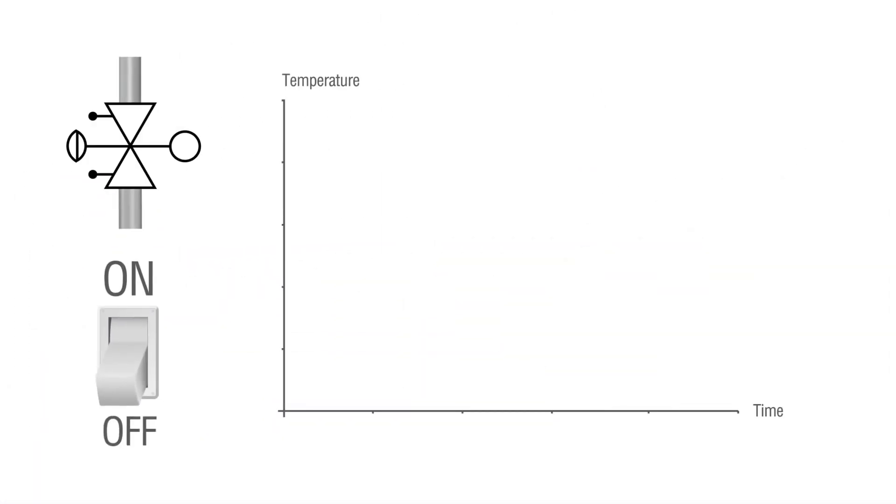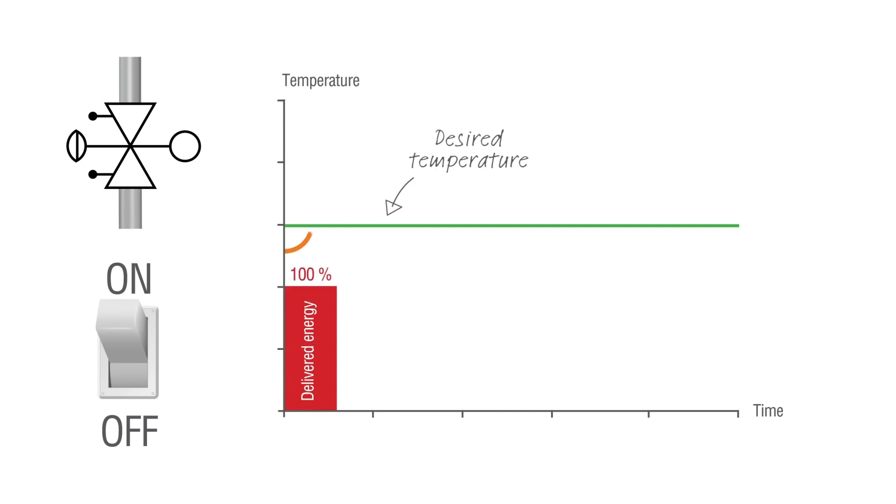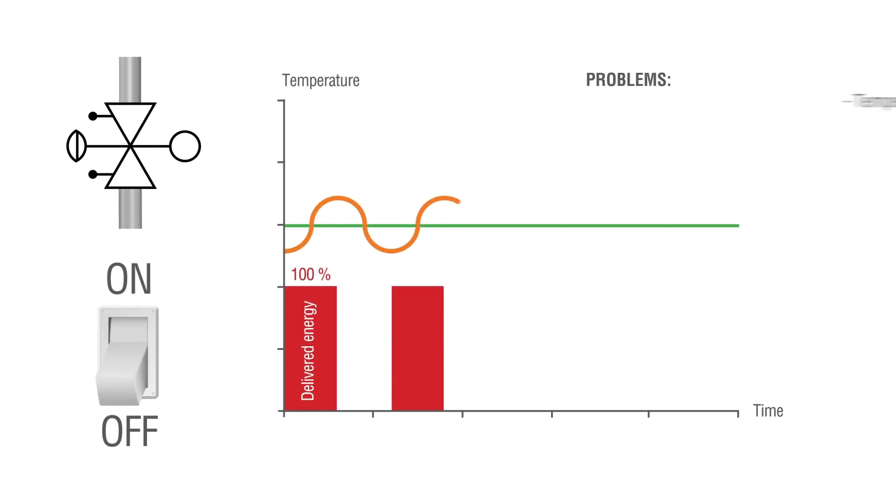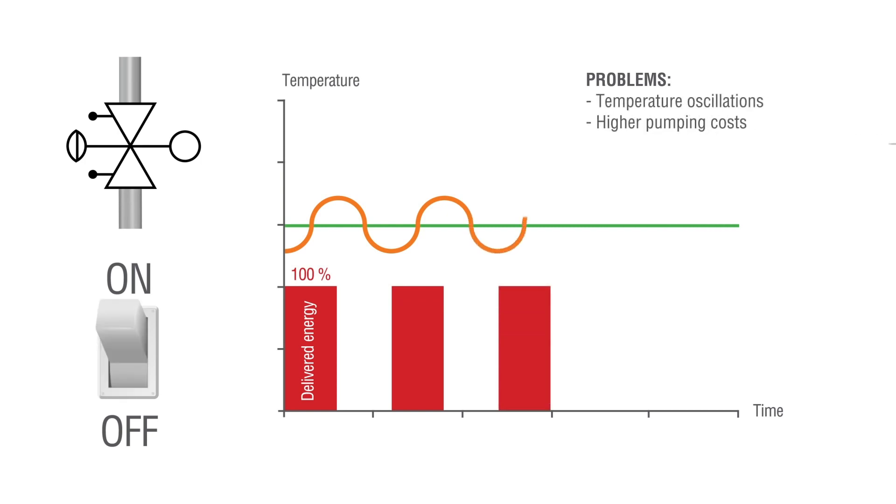If you use on-off control, the valve is either fully open and delivers 100% flow or fully shut. This leads to temperature oscillations and higher pumping costs. The return temperature is also affected.